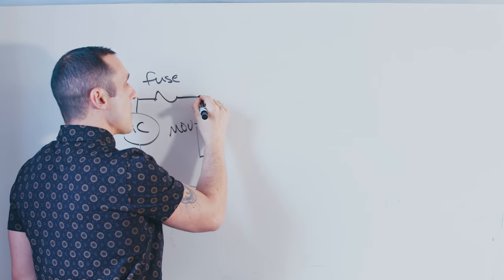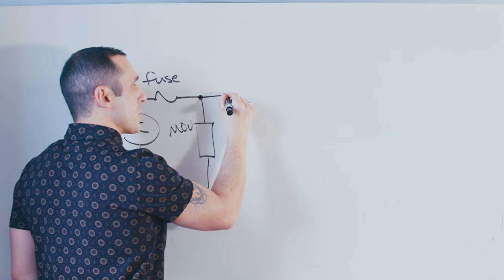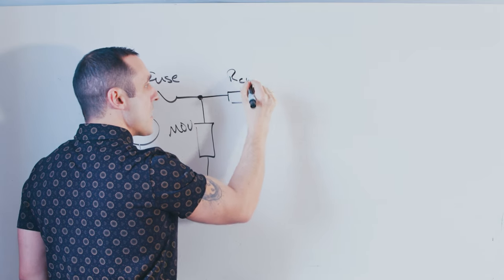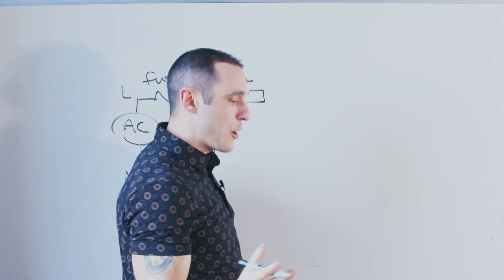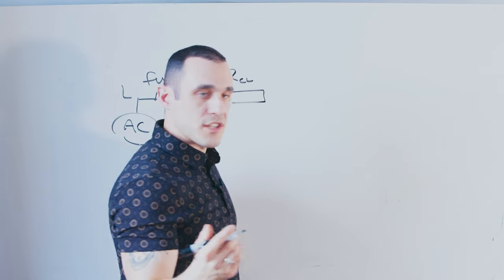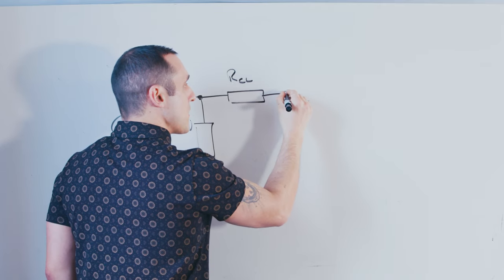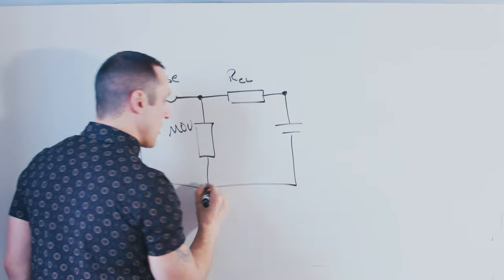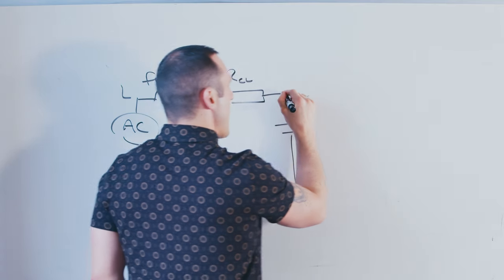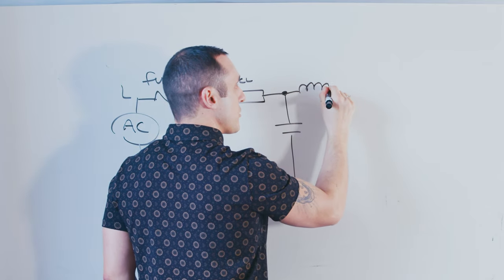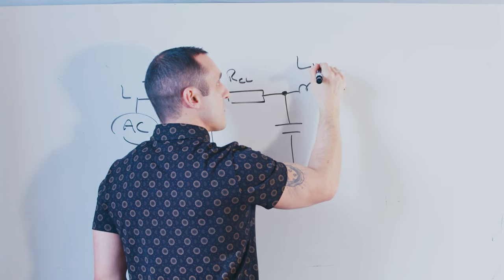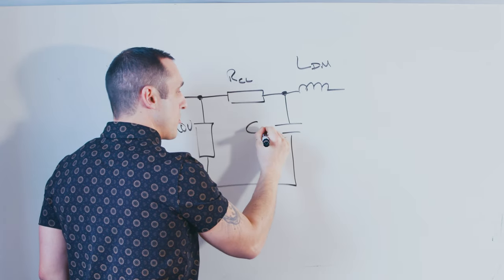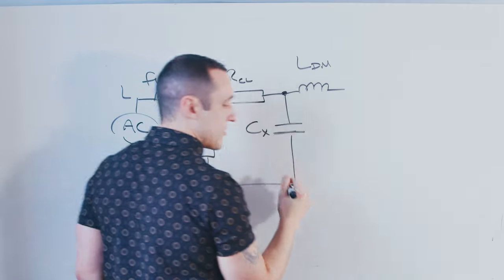Next, you might see a current limiting resistor coming off of the metal oxide varistor, and then you start to see your reactive components like chokes and capacitors. Coming off of this current limiting resistor you can have a capacitor, and then this is where you might see your first choke — normally a differential mode choke, paired with an X class capacitor.